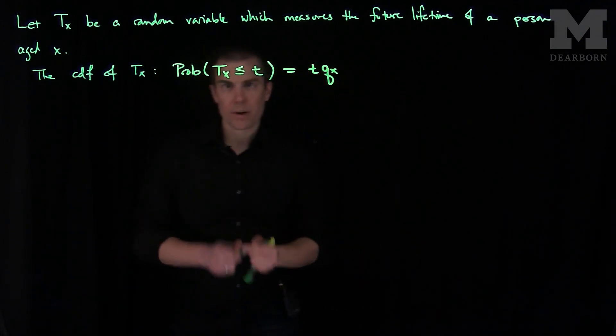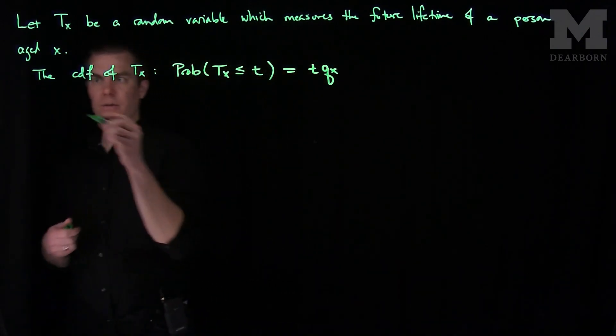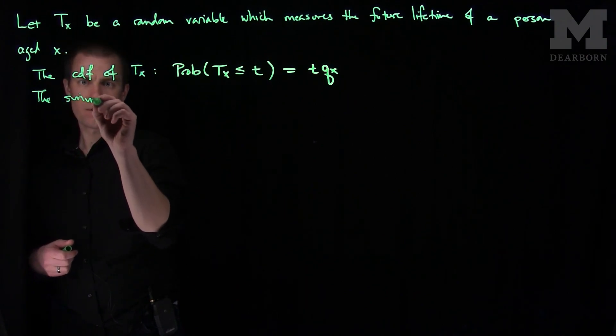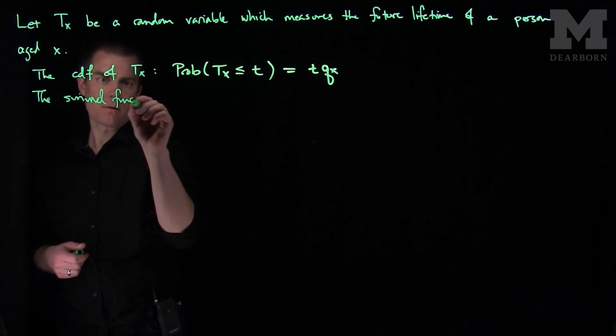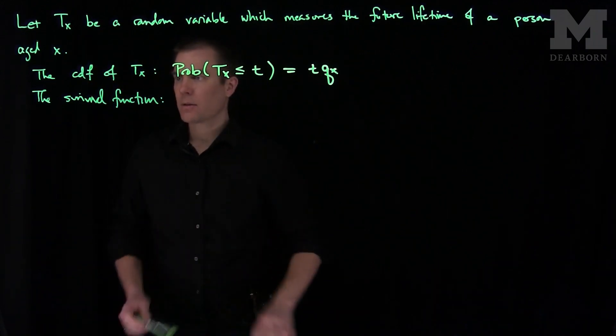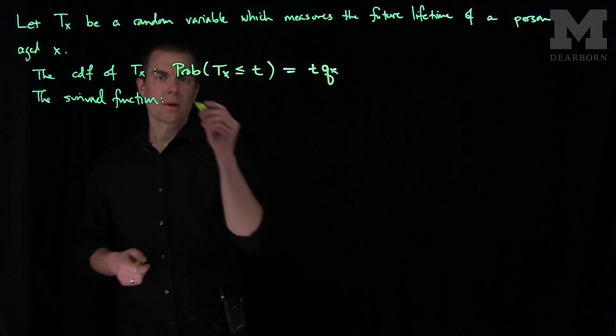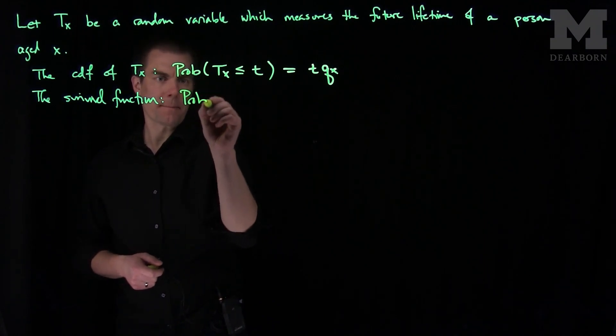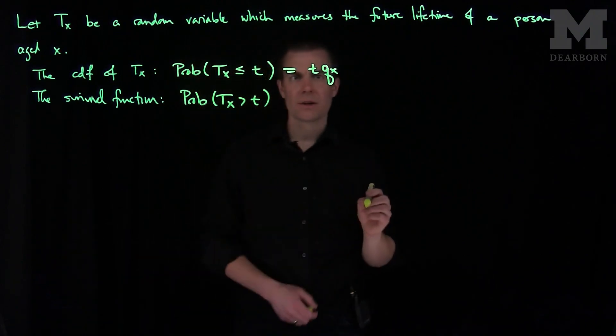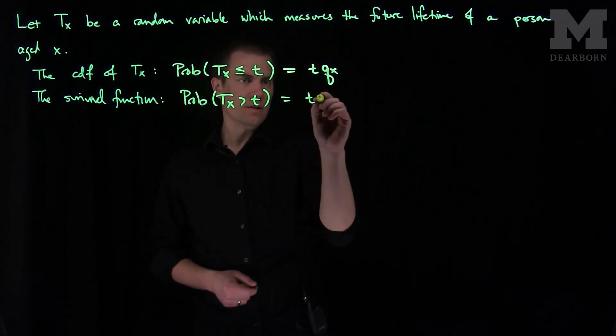We can also write down the survival function. The survival function of T_x is the probability that T_x is greater than t. So the person whose age is x survives longer than t years. This is denoted tpx.